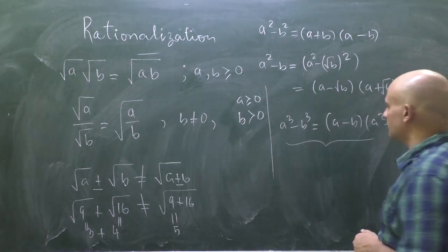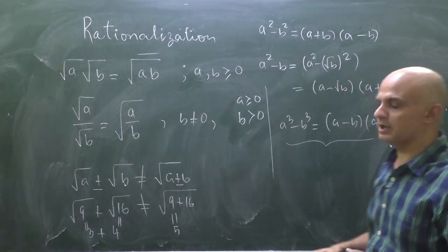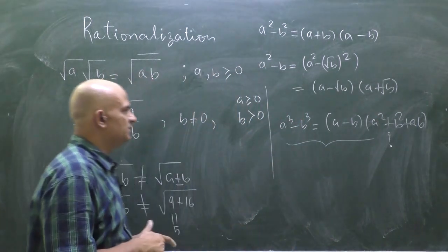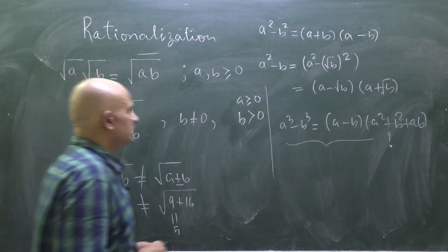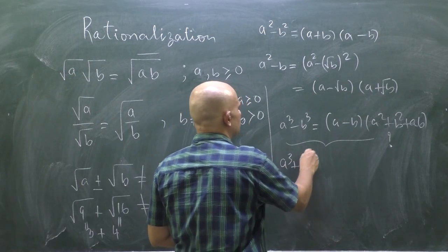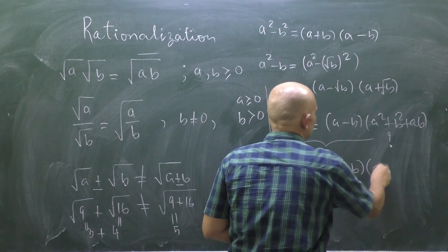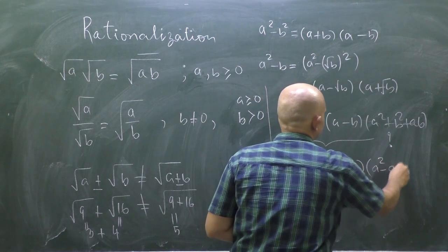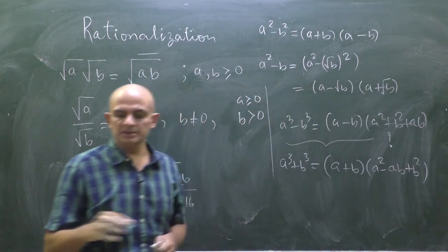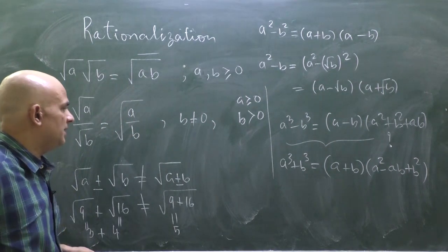I have made a video on a cubed minus b cubed — it is a very interesting video, I request you to watch it. Similarly, a cubed plus b cubed equals (a plus b)(a squared minus ab plus b squared). Keep all these kinds of identities in mind.